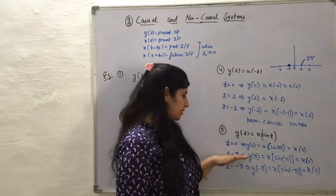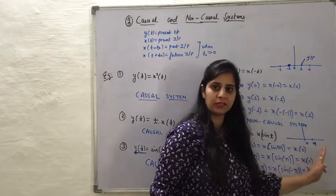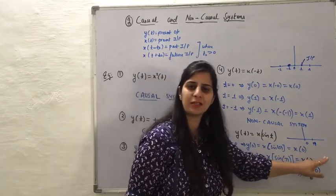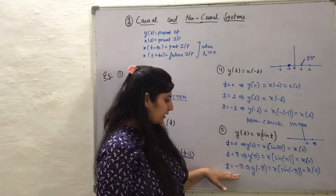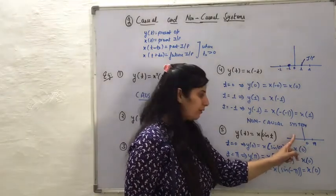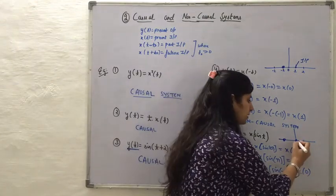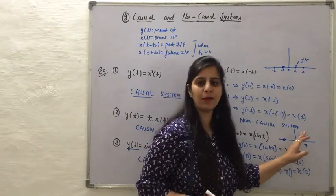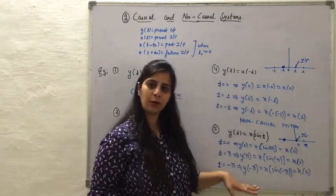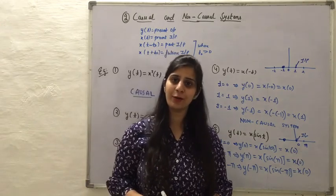The second value considered is t = π, which is a positive value lying to the right of 0. Here y(π) depends upon x(0), which means the output depends upon a past value of the input. The third case is t = -π, which means we are at a time to the left of 0. Here y(-π) depends upon x(0), but since we are at time -π, x(0) is a future value of the input. Since the output depends upon a future value at some instance, this system is again categorized as a non-causal system.